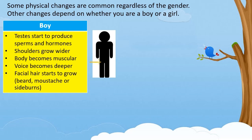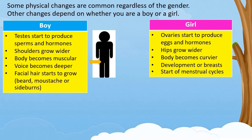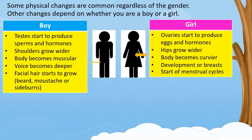For girls: ovaries start to produce eggs and hormones, hips grow wider, body becomes curvier, breasts develop, and menstrual cycles begin. These hormones target the two ovaries, which contain eggs that have been in the girl's body since she was born. The hormones cause the ovaries to start making another hormone called estrogen. Together, these hormones prepare a girl's body to start her period or menstrual cycle and to be able to become pregnant someday.